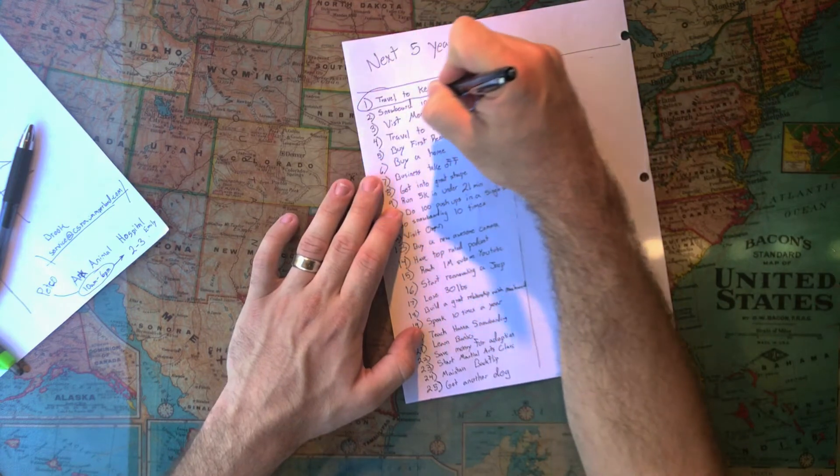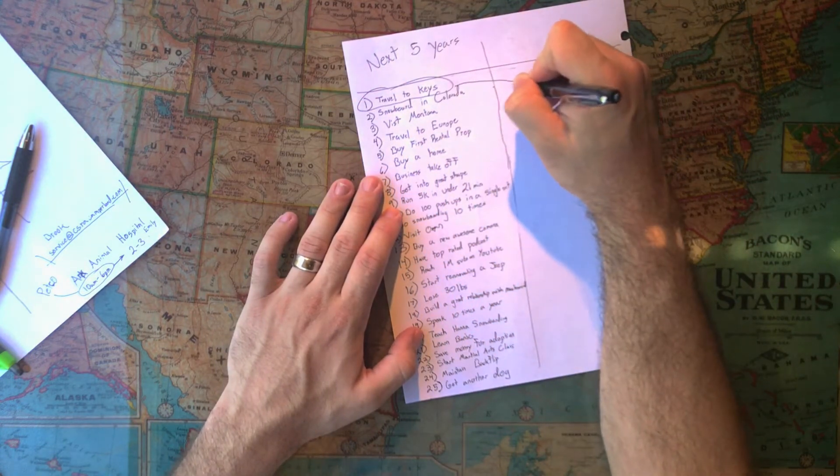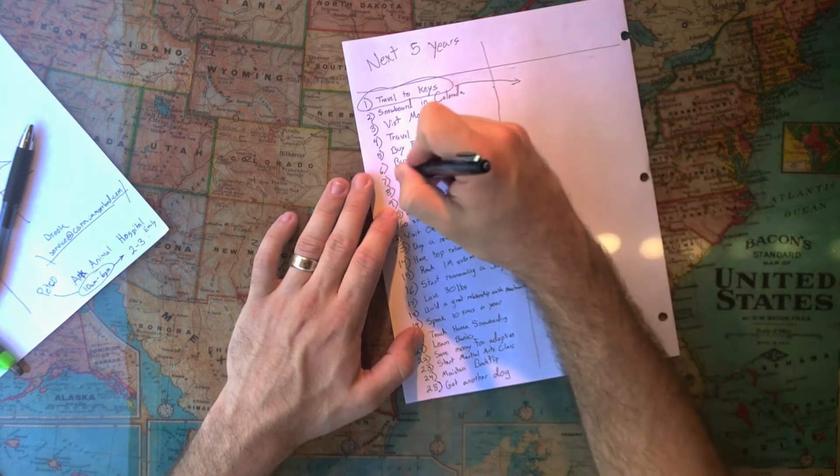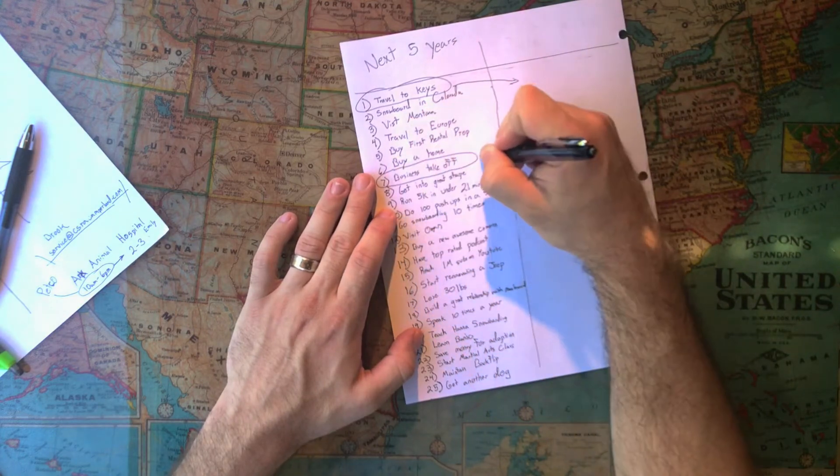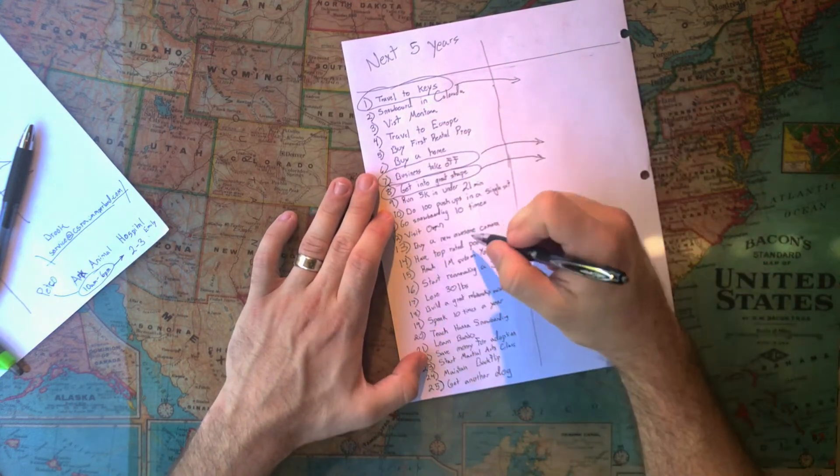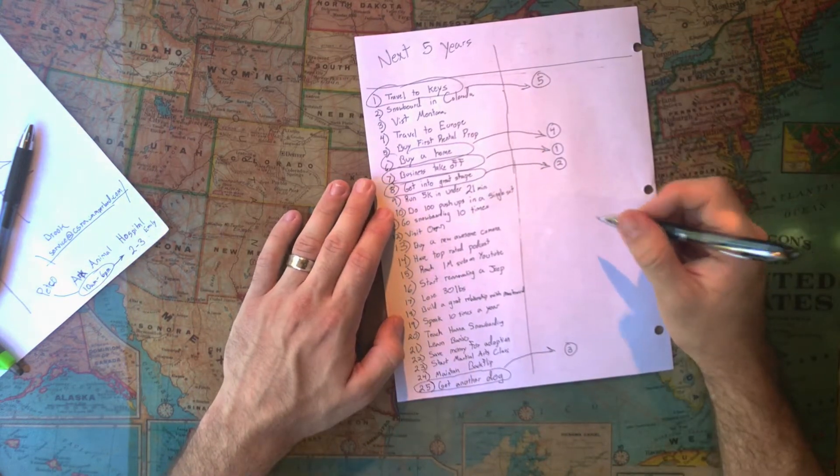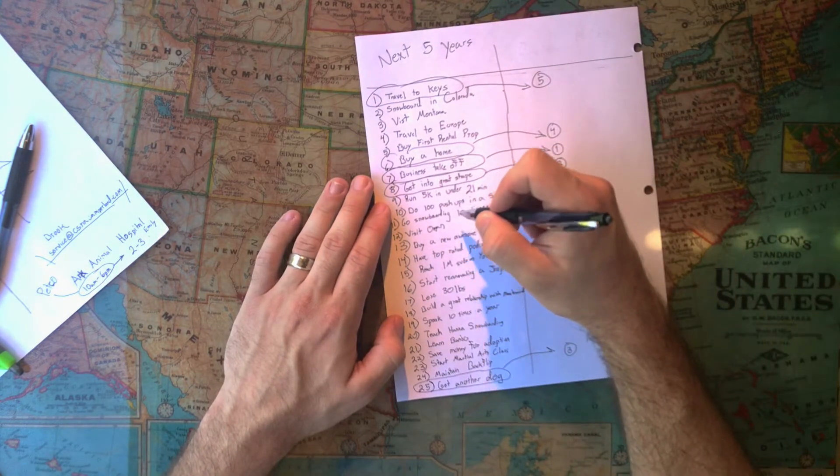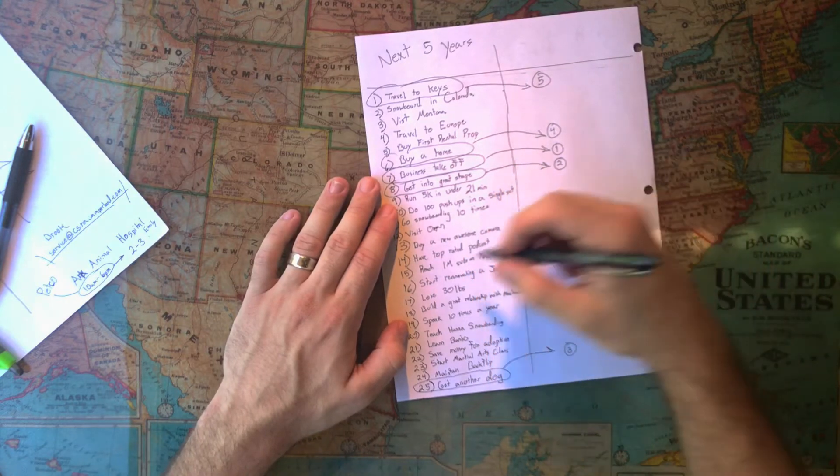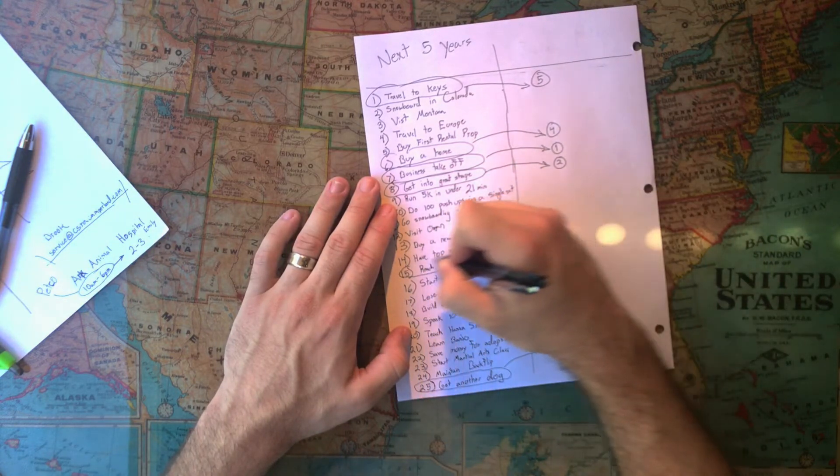So the next step that you want to do, take all 25 of those things and now I want you to start picking out if you could only do five of those things over the next five years, what would they be? Then I want you to go ahead and choose the next five. If you could only do five more, so you get 10 total, but you've already picked your first five. If you only do five more, what would you do next?